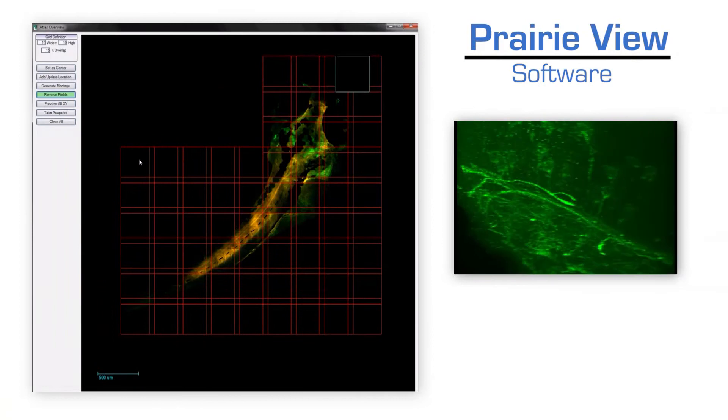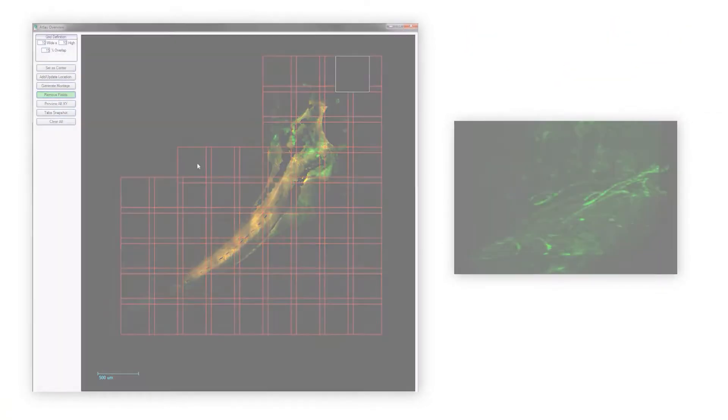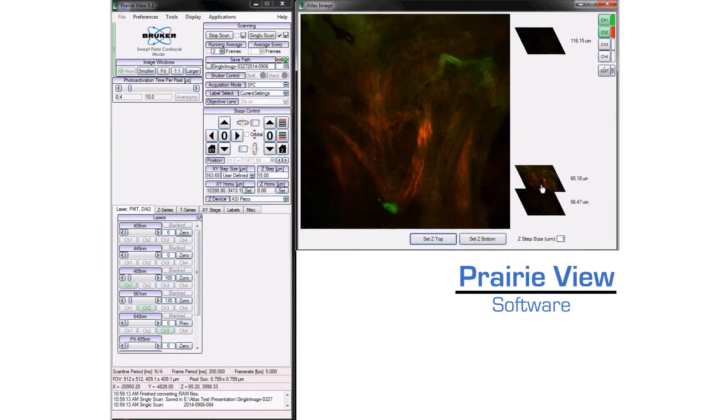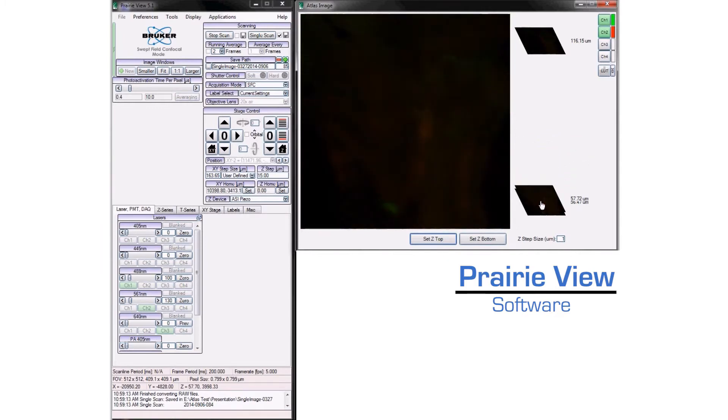Optera is powered by Prairie View, the same software that drives Bruker's multi-photon microscope systems. Prairie View provides scientists with a user-friendly interface that allows even the most complex protocols to be set up with ease.